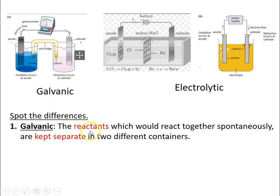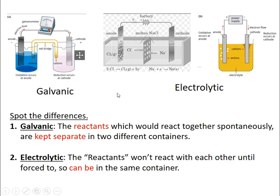This setup is in your textbook. In galvanic cells you have to keep the two half-cells separate because the reactants would react spontaneously if put together. Whatever is losing electrons and whatever is gaining electrons — if you put them directly together the electrons would be lost straight into the solution. So the reactants have to be kept separate, meaning you need two separate containers for a galvanic cell.